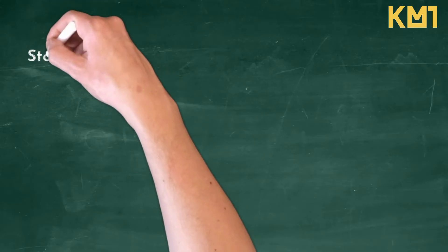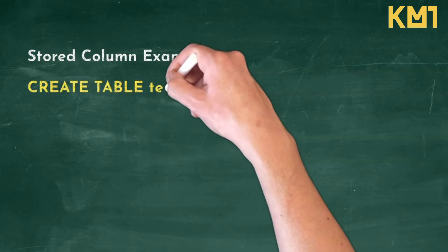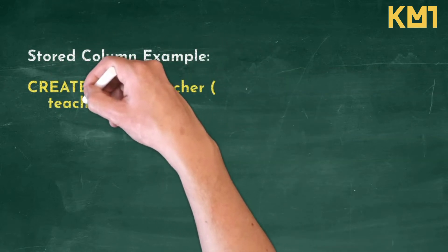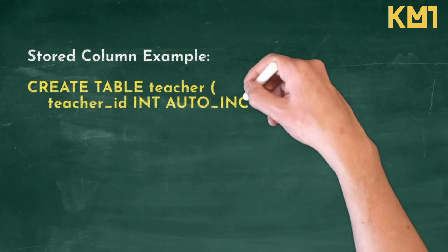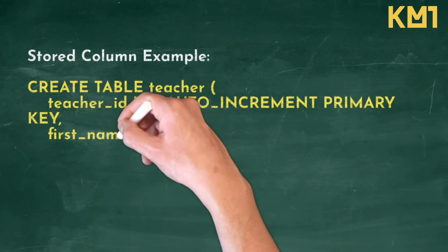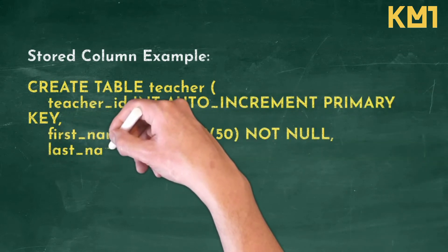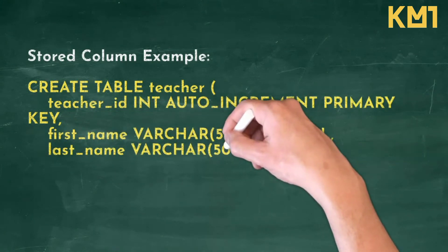Now let us see an example of a stored column. In this example, we will create a table of teacher having teacher_id as a primary key with auto-increment, and similarly the first_name as VARCHAR not null and the last_name.